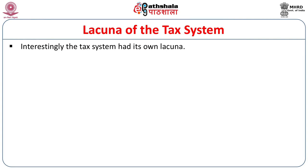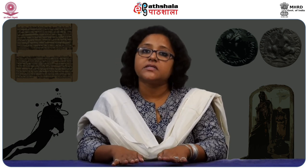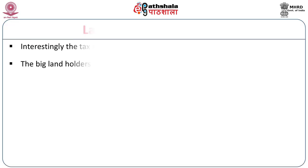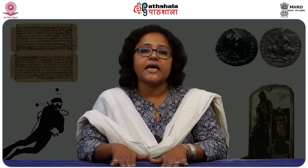Interestingly, the tax system had its own lacuna. Like any other tax system, it had to operate on a uniform basis over a large area, which was impossible because intermediaries existed at different stages down the line. The big landholders paid less tax as hereditary local heads — traditionally in India no system could alter this. So they were holding more land and paying less tax, and whenever there was an increase in state demand, it was always the peasantry who had to pay more.